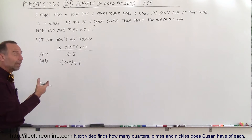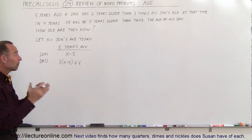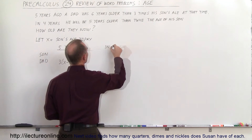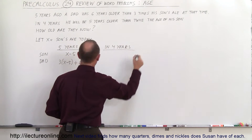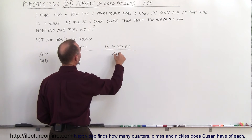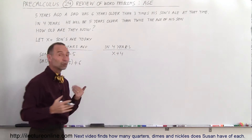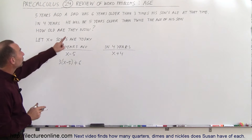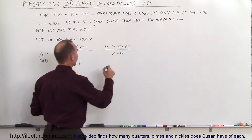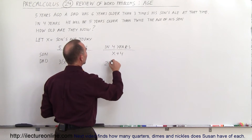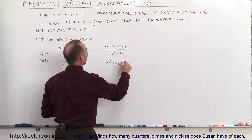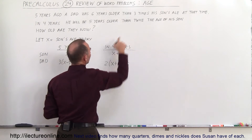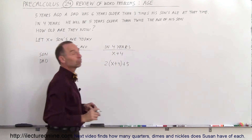Now we have the son's age and the dad's age expressed in terms of X five years ago. Let's go into the future — in four years. The son will be X plus four. The father's age will be five years older than twice the son's age, so two times (X plus four) plus five.